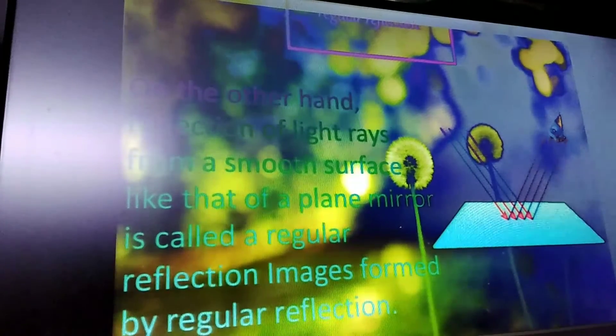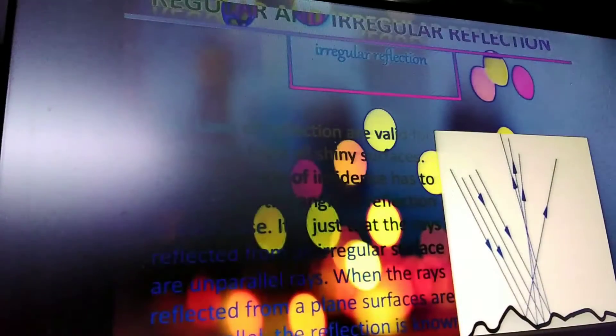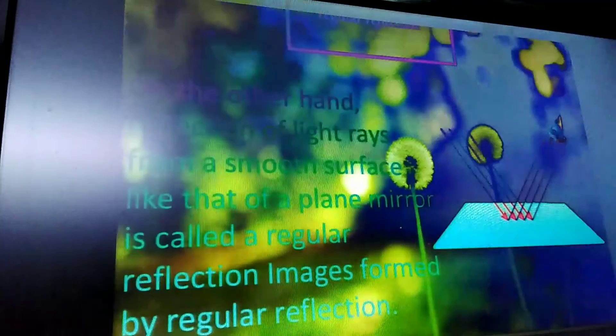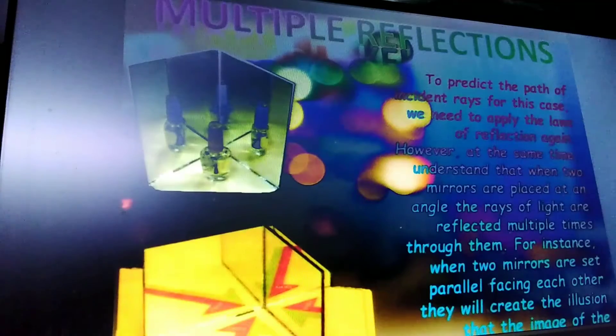Types of reflection include regular and irregular reflection, and multiple reflections.